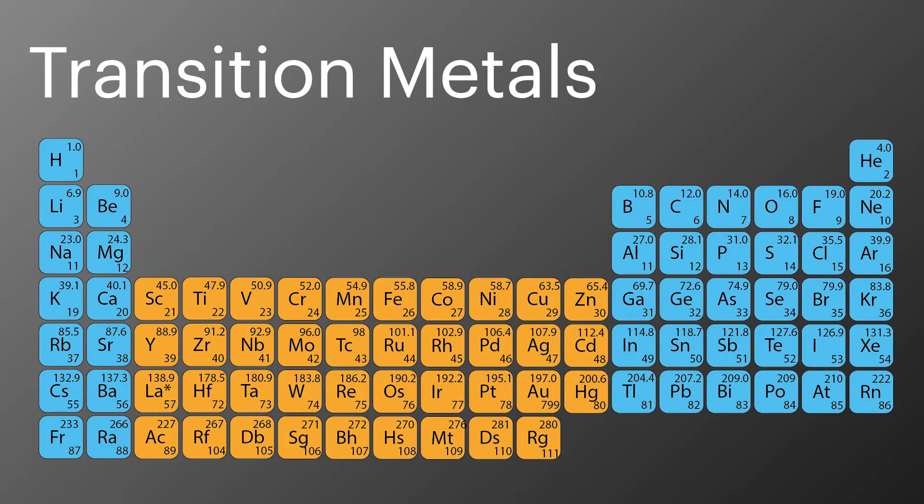The transition metals are often thought of as the metals in the middle of the periodic table. They're highlighted here in orange. This is also known as the D block. This is because the highest energy electrons for these elements occupy the D subshell.